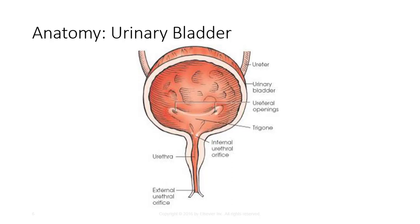The urethra conveys urine out of the body and measures approximately 1.5 inches long in females and approximately 7 to 8 inches long in males. The prostate is a small glandular body surrounding the proximal part of the male urethra and is considered part of the male reproductive system, but because of its location is often described with the urinary system. It measures approximately 1.5 inches transversely, three quarters of an inch at its base, and 1 inch vertically.